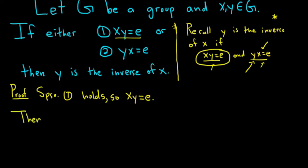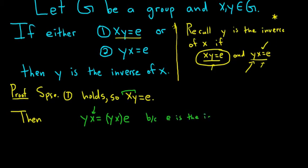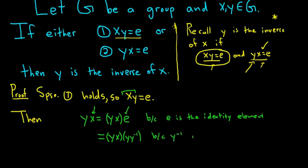So we naturally start by looking at yx. We somehow have to use the condition that xy is equal to E. Here we have an x, so it'd be nice to have a y next to it on the right. So what we'll do is insert the identity element: yx equals yxE, because E is the identity element. And we want a y there so we can use our condition, so we can write this as yx times y·y⁻¹, because y⁻¹ is the inverse of y.